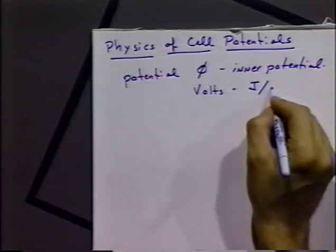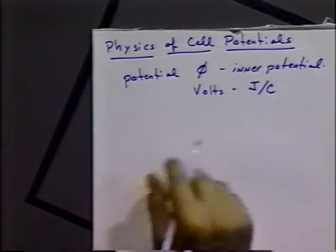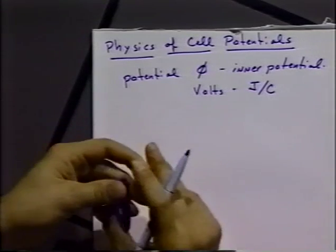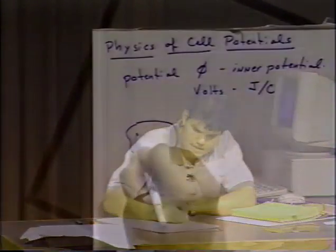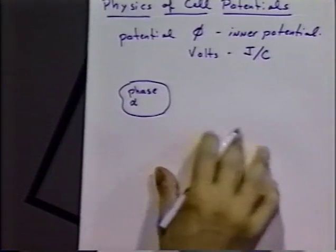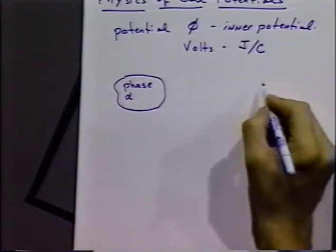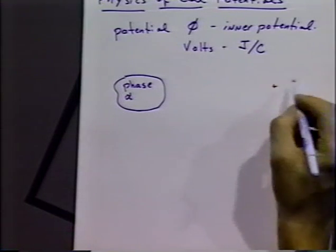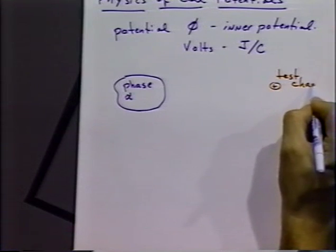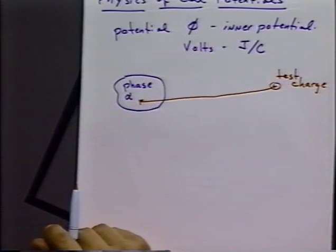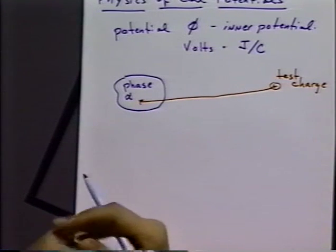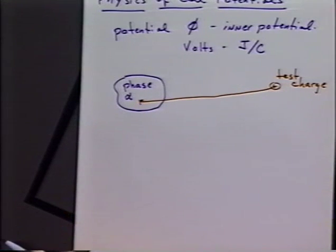Volts has units of joules per coulomb in the SI system. The inner potential is the potential that you would measure inside a uniform phase of material. The way it is calculated in theory is to think of some phase, let's call it phase alpha, and think about a test massless charge starting from infinity and bringing that test charge into the inside of our phase, calculating the work required to move that test charge from infinity into the phase.